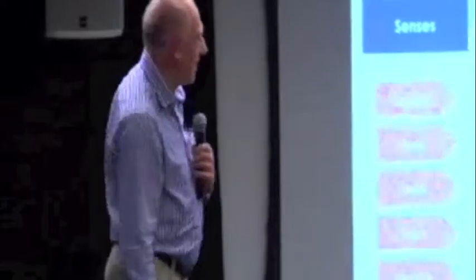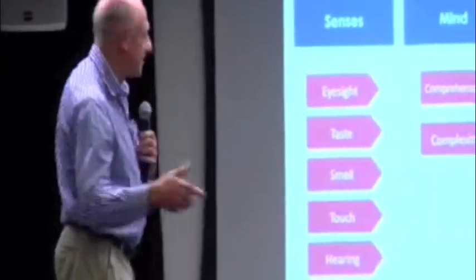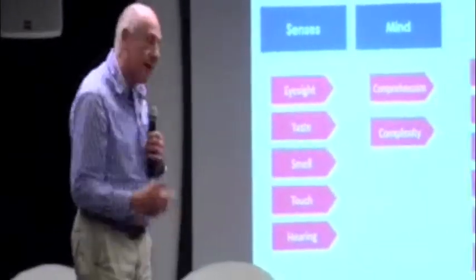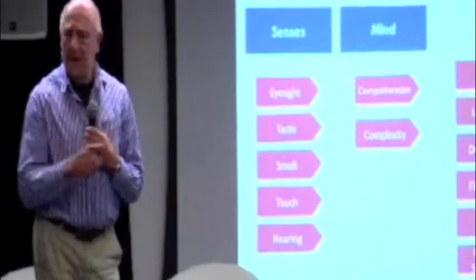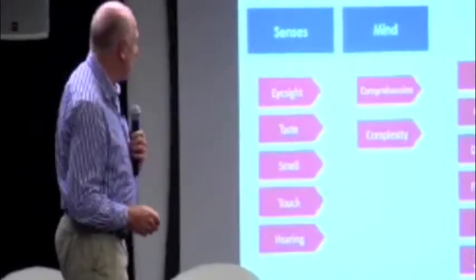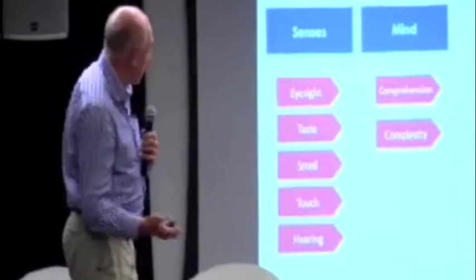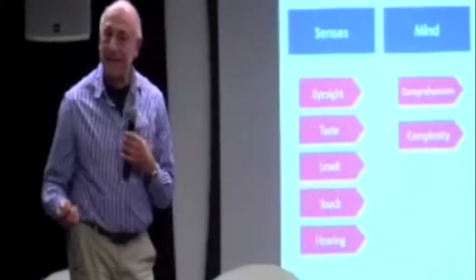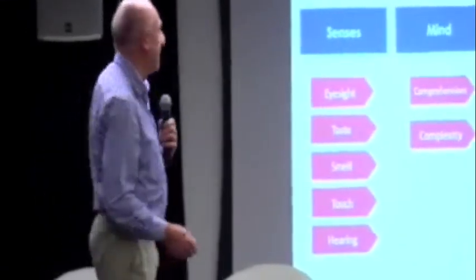And once you start doing that it all starts to get a little bit more complicated because those three things suddenly branch out into quite a lot more different aspects. So you've got eyesight, taste, touch, hearing, the cognitive decline changes in many many different ways, and then as far as the body you've got the changing skin, dexterity, flexibility, muscle change, etc.